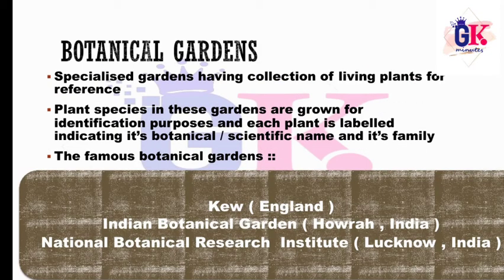Next, Botanical Gardens — these are specialized gardens having a collection of living plants for reference. Unlike herbarium sheets where specimens are dried and preserved, in botanical gardens plants are kept alive. The plant species are grown for identification purposes and each plant is labeled indicating its botanical or scientific name and its family. Famous examples include Kew Botanical Garden in England, Indian Botanical Garden in Howrah, and National Botanical Research Institute in Lucknow.